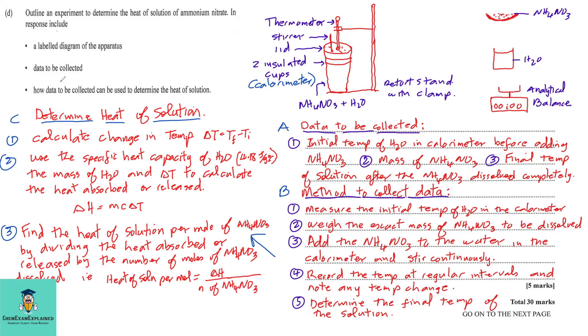The second part is the data to be collected. So, the data to be collected would be the initial temperature of the water in the calorimeter before adding the ammonium nitrate. Two, we need the mass of ammonium nitrate. And three, we need the final temperature of solution after the ammonium nitrate dissolved completely.